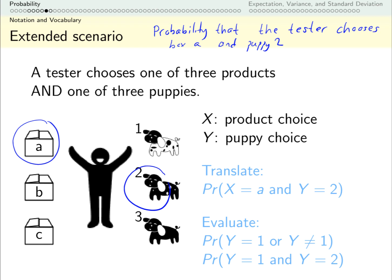Now this isn't a number I can tell you. We would need to actually do this trial or have more information, but at least I can express it. The second and third expressions we actually can come up with values for. This says, what is the probability that the tester chooses puppy 1 or they don't choose puppy 1? The way our system is set up, they definitely have to choose a puppy. So some of them choose puppy 1 and the rest of them don't choose puppy 1. So certainly one of these two things happens. So this probability is 1.